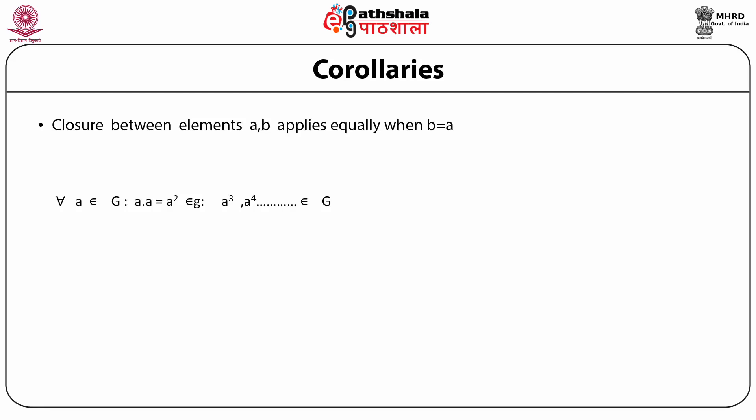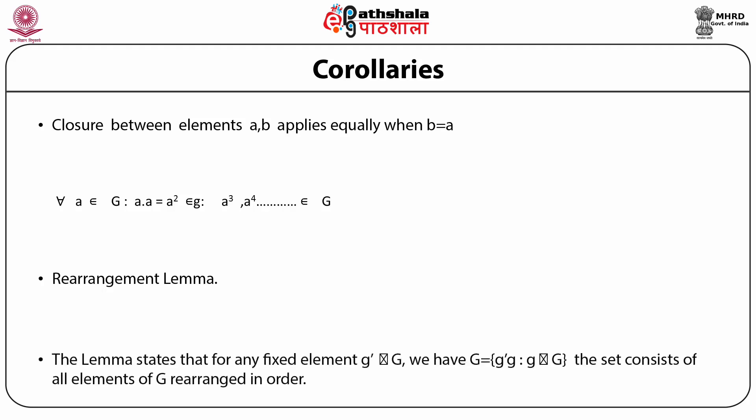Another property which follows from the axioms is the rearrangement lemma. The lemma states that for any fixed element G' belonging to the group G, the set consisting of elements G'·G, where G ranges over all elements of G, consists of all elements of G but in a different order. This is called the rearrangement lemma.